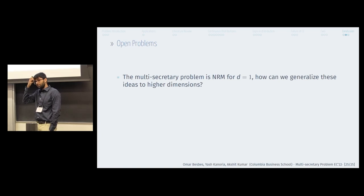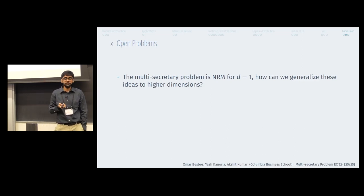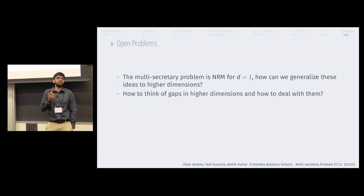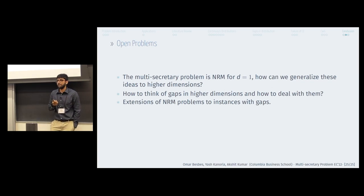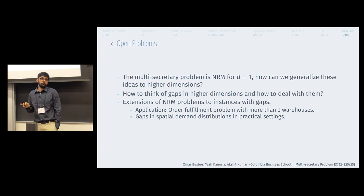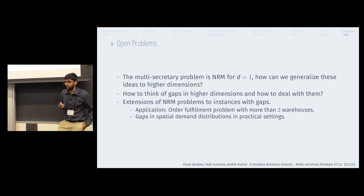While we close a significant gap in the secretary problem, it opens the door for many other questions. The secretary problem is in one dimension — how does one generalize these ideas to higher dimensions? More fundamentally, how do you think about gaps in higher dimensions, and what is the algorithmic approach to deal with them? This has applications for a huge variety of network revenue management problems with gaps, such as order fulfillment with multiple warehouses, where gaps in spatial distributions naturally arise and can lead to large regret.